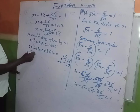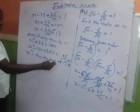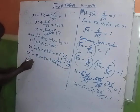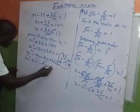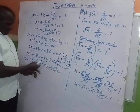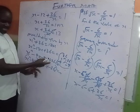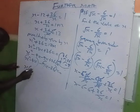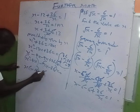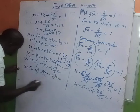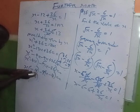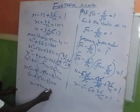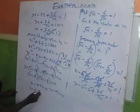So we rewrite as x² - 4x - 9x + 36 = 0. Grouping: x(x - 4) - 9(x - 4) = 0. Factoring out (x - 4): (x - 4)(x - 9) = 0. Therefore x = 4 or x = 9.